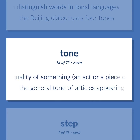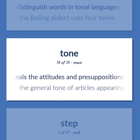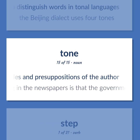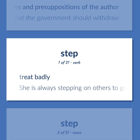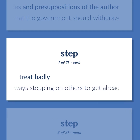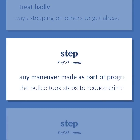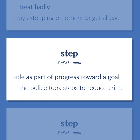The quality of something, an act or a piece of writing, that reveals the attitudes and presuppositions of the author. The general tone of articles appearing in the newspapers is that the government should withdraw. Treat badly. She is always stepping on others to get ahead. Any maneuver made as part of progress toward a goal. The police took steps to reduce crime.